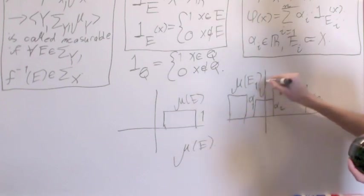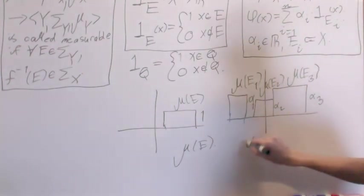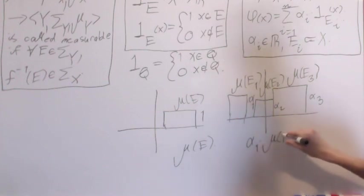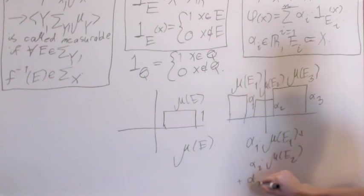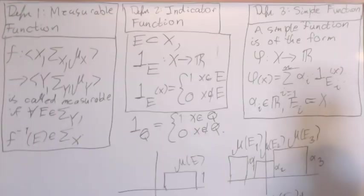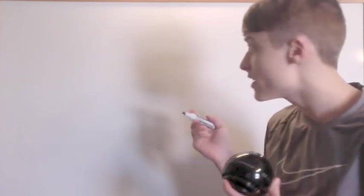and each of the measures of the individual sets. Mu of e1, mu of e2, mu of e3. And these form rectangles. And then you just add them up. And this is the intuition behind the Lebesgue integral definition, which I'm going to give you right now.